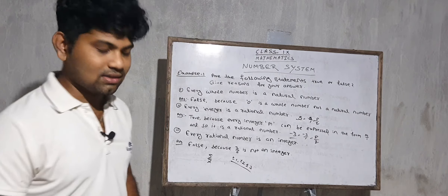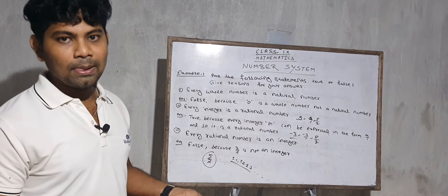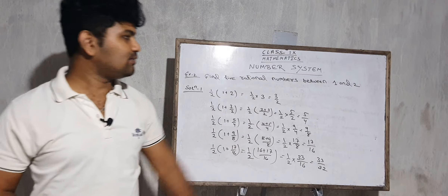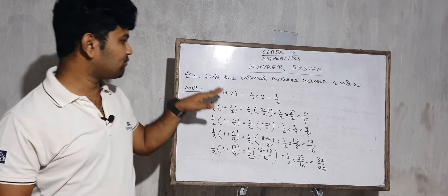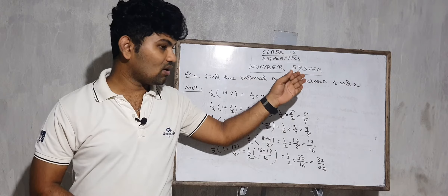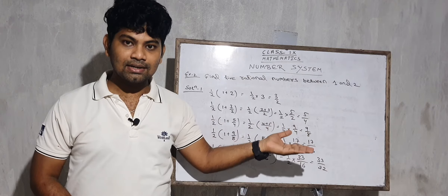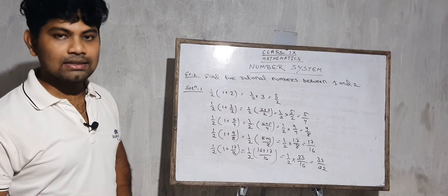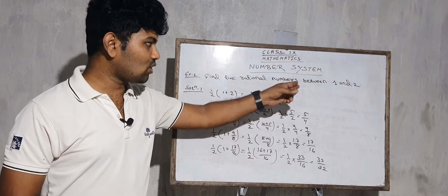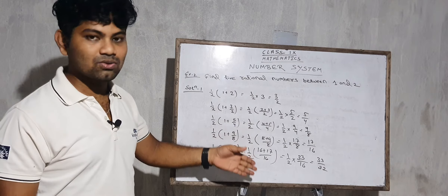Next is Example 2: find 5 rational numbers between 1 and 2. We will solve this in 2 methods. We just recall this type of question we solved in standard 7. Here is example 2 — we will solve using 2 methods. First I will show method 1, then method 2.